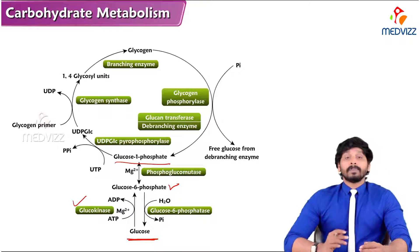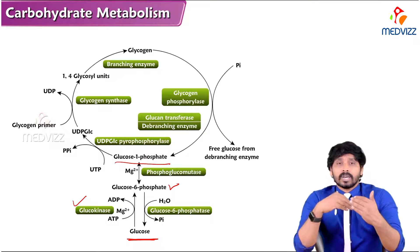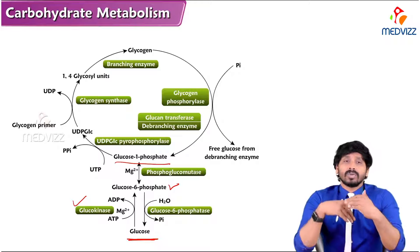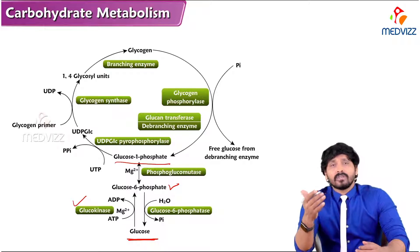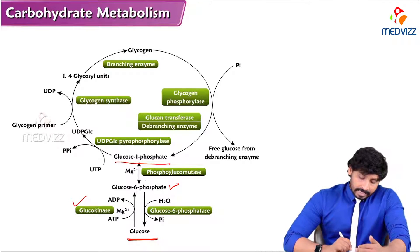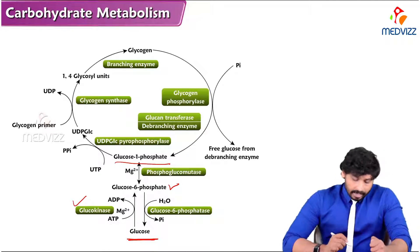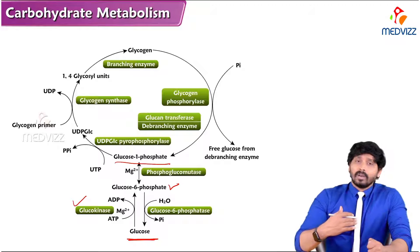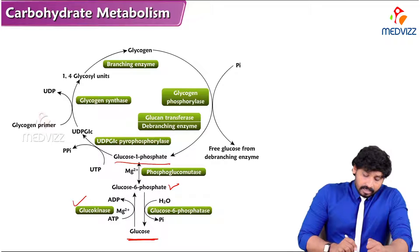Next, glucose-6-phosphate is converted to glucose-1-phosphate. This means the attached phosphate group shifts from the sixth carbon of glucose to the first carbon. This isomerization of glucose-6-phosphate to glucose-1-phosphate is carried out by the enzyme phosphoglucomutase, which also requires magnesium.